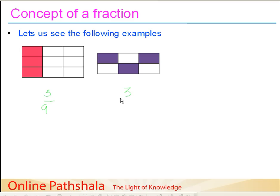And how many total parts do we have? It is six — one, two, three, four, five and six. So what we are essentially saying is we are considering three parts out of six parts.